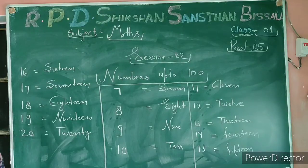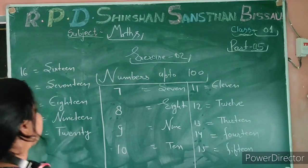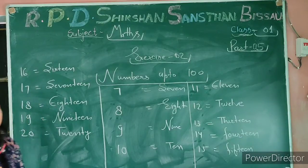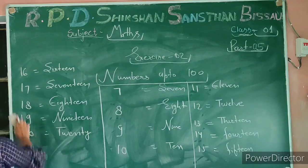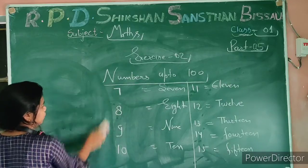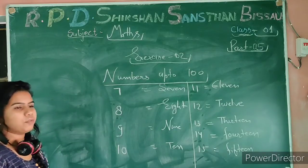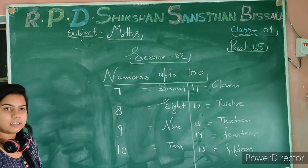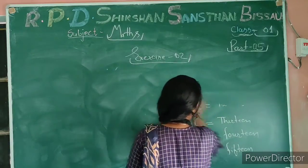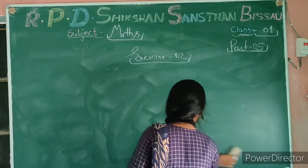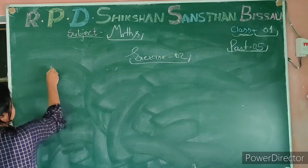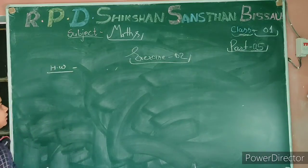Today I will give you more counting numbers up to 100 to learn and write. In the next class I will explain 20, 30, 40, 50 and how we write easy counting step by step.